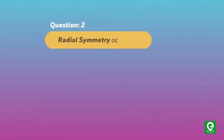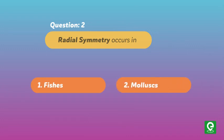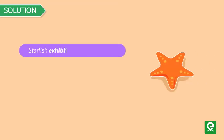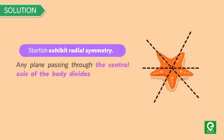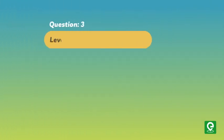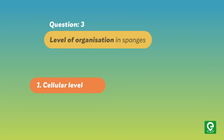Question 2: Radial symmetry occurs in (1) fishes, (2) mollusks, (3) starfishes, (4) sponges — AFMC 2012. Solution: Echinoderms, for example starfish, exhibit radial symmetry — any plane passing through the central axis of the body divides the organism into two identical halves. Hence option 3 is correct.